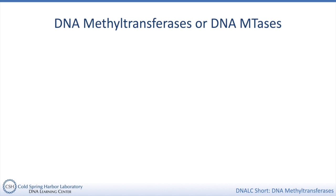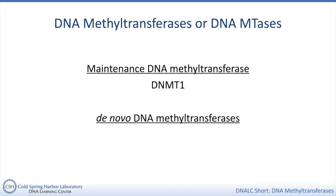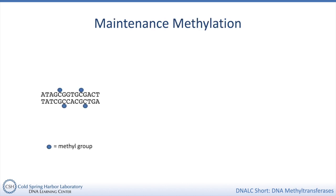There are three known active DNA methyltransferases in mammals, and we often see them divided into two groups: a maintenance DNA methyltransferase called DNMT1, and two de novo DNA methyltransferases called DNMT3A and DNMT3B. Let's talk first about maintenance methylation.